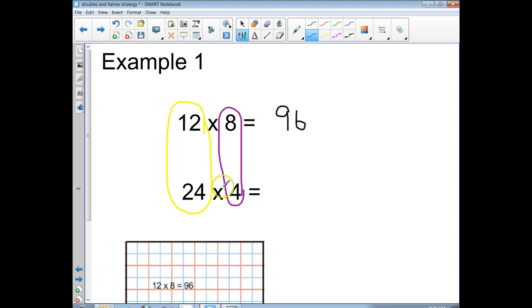So this number right here between the 12 and the 24, I'm doubling. So let's put a line in to show that from here to here we're doubling. Now this side right here, from the 8 to the 4, it's a half.